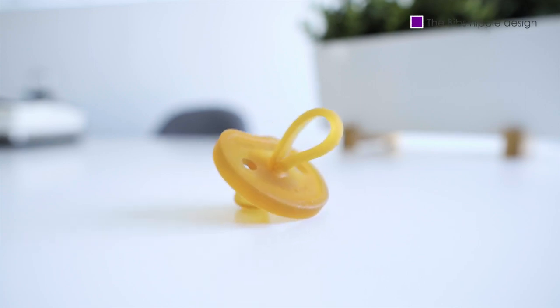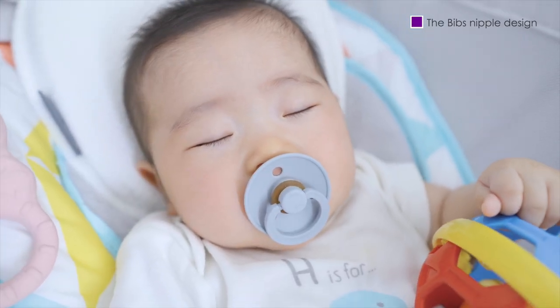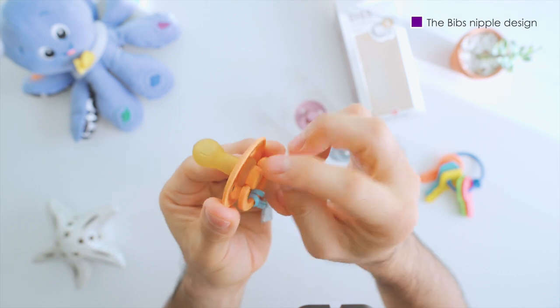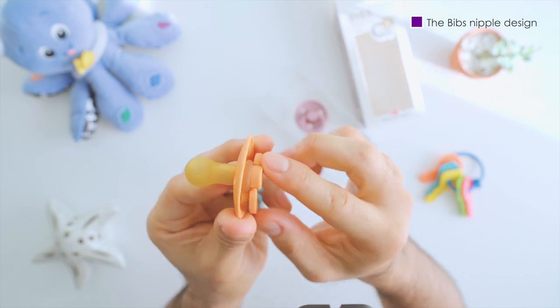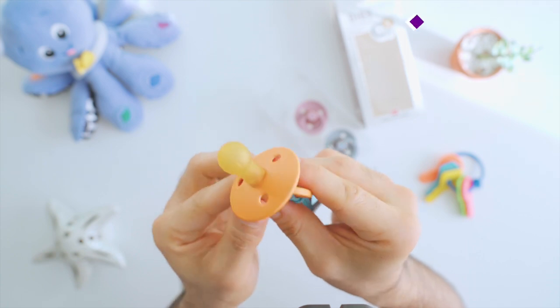In our experience, our little one is able to keep the Bibs in her mouth easier than with other designs, because of the bulb at the end. The length of the stem also works well and we like the handle, or the ring if you would like to call it that, that connects to the nipple.